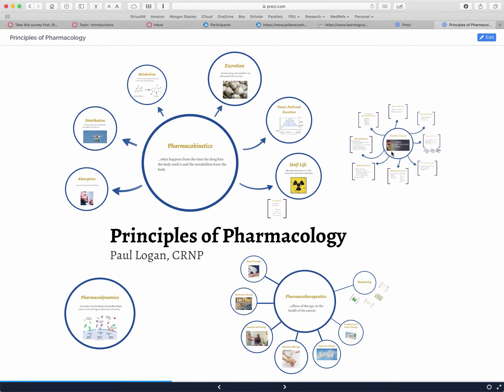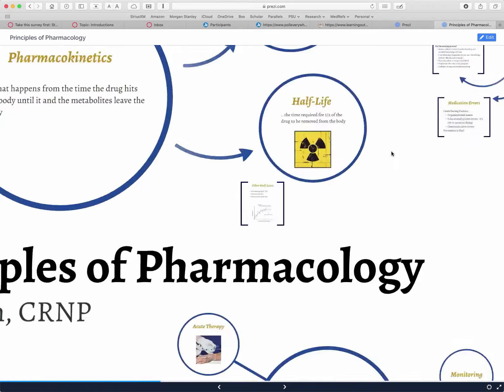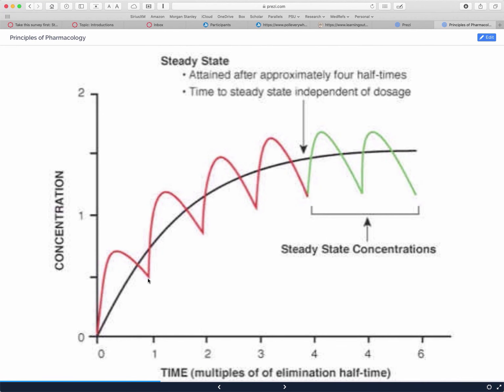You're going to get a little more practice with that on your assignment that's due after the first class. So start thinking about what that steady state really means. And remember, these are half-lives. This is a half-life. So one half-life, then I give the next dose at the dosing interval—that's the second half-life. The third half-life. The fourth half-life. After the fourth or fifth half-life, you're at steady state.